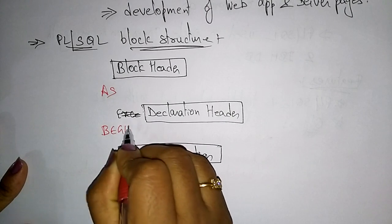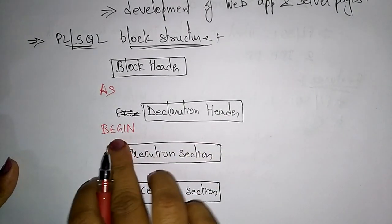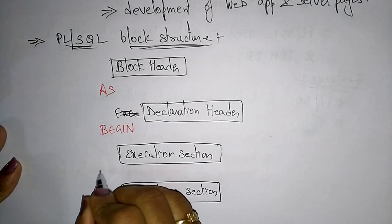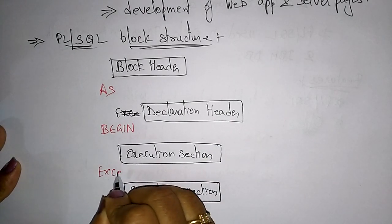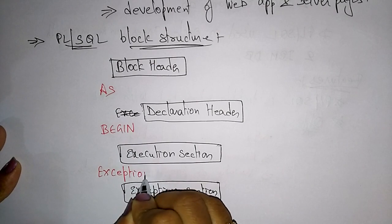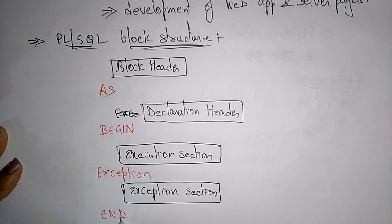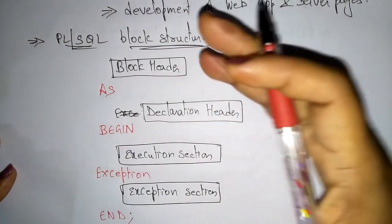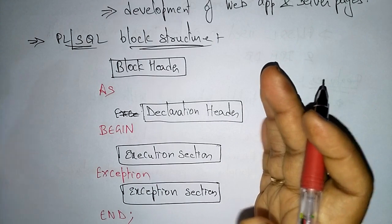After the block header, you write the declaration section. Then you begin the program. After 'begin', you write the execution section. Next comes the exception section if needed, and finally 'end'. This is the complete structure of a PL/SQL program.